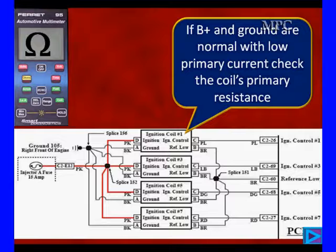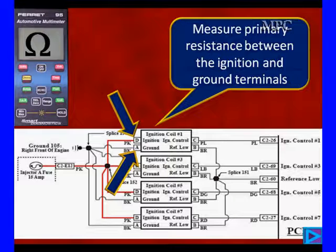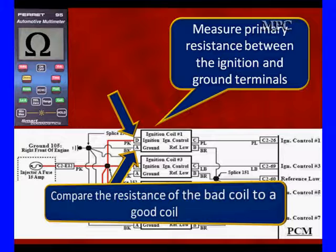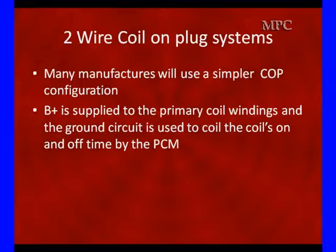If they're all normal and low primary, you've got to go check the primary's resistance, and you're going to need a good spec for that. You go and measure the ohms from pin A to pin D on this particular vehicle and measure the resistance. Compare the resistance of a bad coil and a good coil. That's the best way. As we've looked at the specs, most of the specifications we find, because of different vendors supplying parts that are not identical, it's safer to measure different coils. We've got four of them on right here together. It's pretty easy to measure.